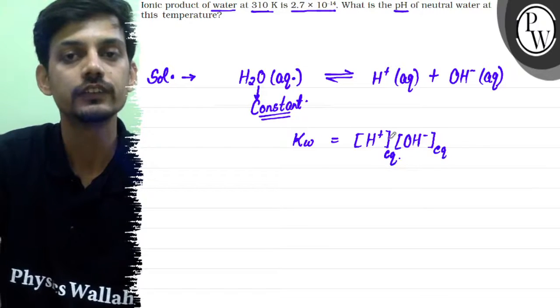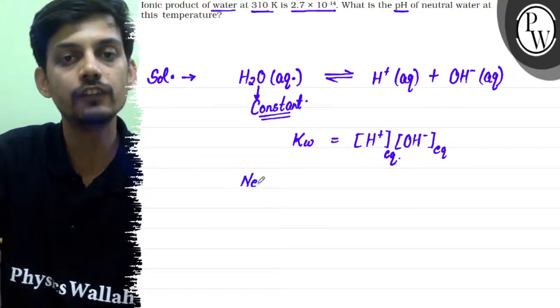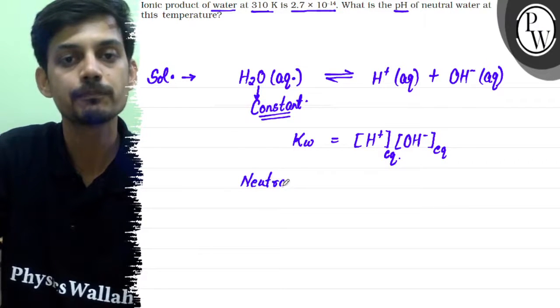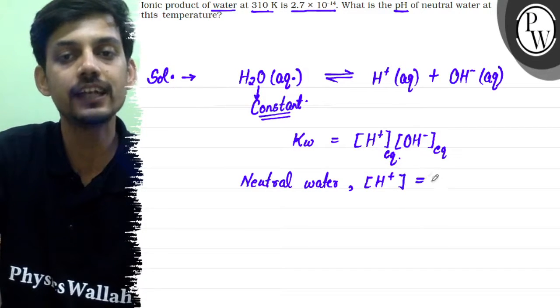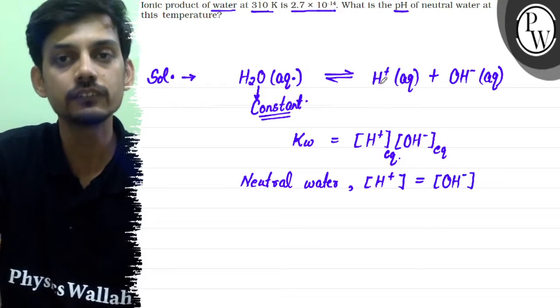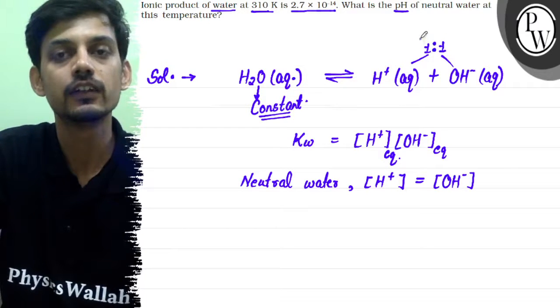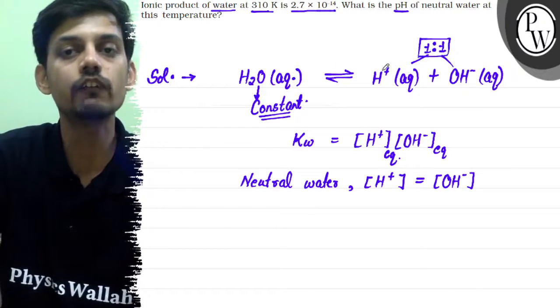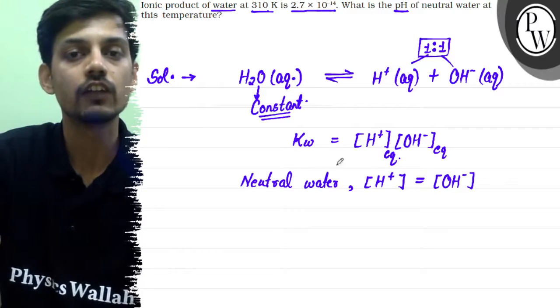For neutral water, we can say that the concentration of both H+ ion and OH- ion will be equal. According to stoichiometry, as much H+ ion forms from ionization, the same amount of OH- ion also forms. So in neutral water, H+ and OH- concentrations are equal.